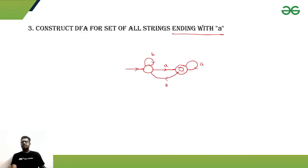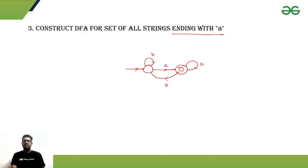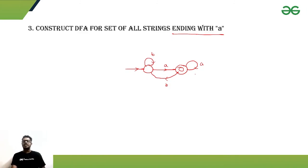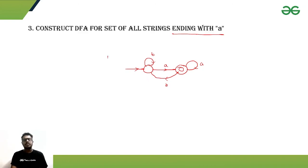If in the final state we get another 'b', that means the string is no longer ending with 'a', so we go back to an intermediate state. From the intermediate state we need at least one 'a' again to reach the final state. Whenever we get the last symbol as 'a', we go to the final state — that is the DFA corresponding to the given problem.